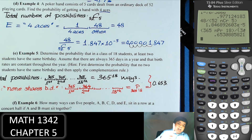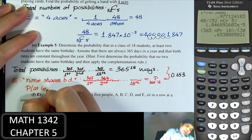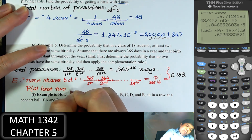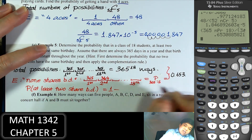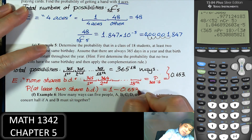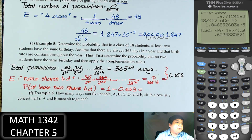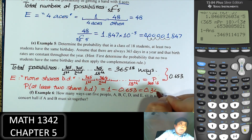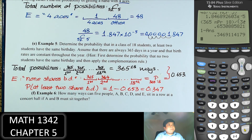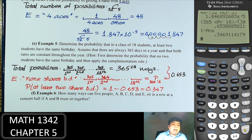What we want is at least two of them sharing a birthday, which is the complement. So the probability is 1 minus 0.653, which equals approximately 0.347. As expected, the more people we have, the greater the chance for two of them to have the same birthday.